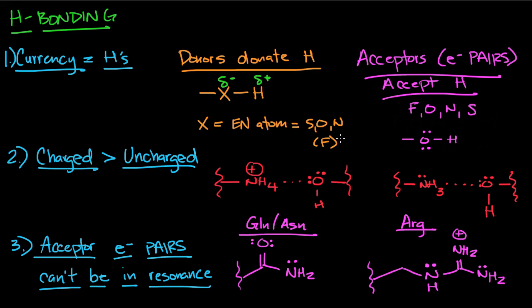So this H gets donated to the acceptor. The acceptor is going to be same type of electronegative atom, except we're going to be focusing on the electron pair. It's not the fluorine, oxygen, nitrogen, or sulfur atom. It's the electron pair that's present on the fluorine, oxygen, nitrogen, or sulfur.